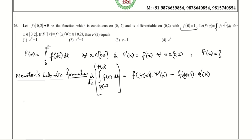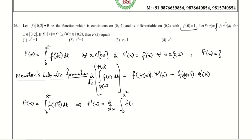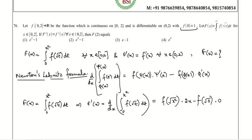Our capital F(x) is given as the integral from 0 to x² of f(√t) dt. When I take the derivative — d/dx of this integral — using Newton's Leibniz formula, I substitute x² into f(√t), which gives f(√(x²)) = f(x), then multiply by the derivative of x², which is 2x. The lower limit gives f(√0)·0 = 0. So F'(x) = f(x)·2x = 2x·f(x).